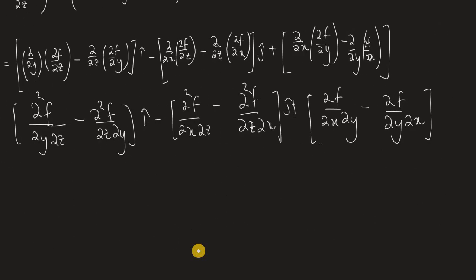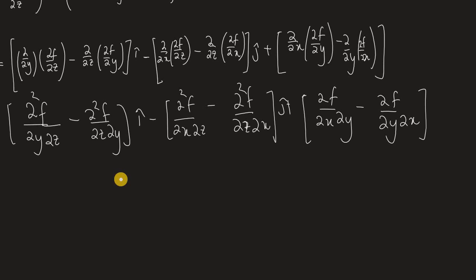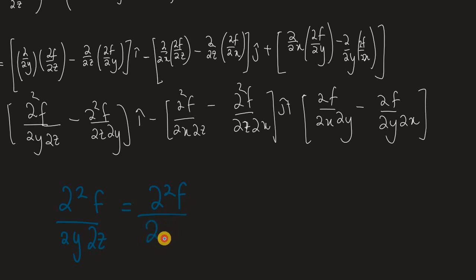Now, as I explained in my previous video on mixed partial derivatives, the order in a mixed partial derivative is irrelevant. That means ∂²f/∂y∂z equals ∂²f/∂z∂y — they are exactly the same thing. So in the i-hat term we're subtracting the same thing from itself, which gives us 0.